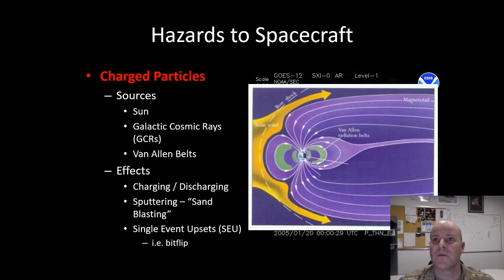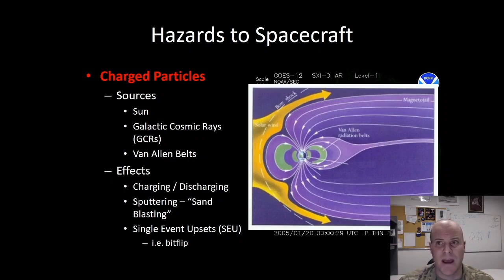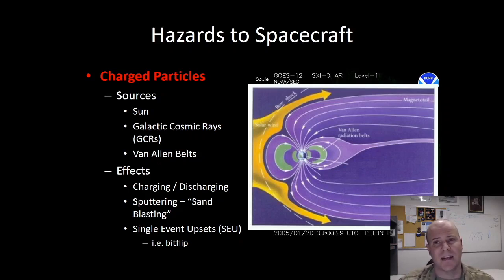These belts occur when charged particles get trapped due to Earth's magnetic field. Charged particle effects may be in the form of rapid charging or discharging of our spacecraft, sputtering or sandblasting from high-speed particle impacts, or bit-flips also known as single-event upsets, which may harm satellite electronics and communications.